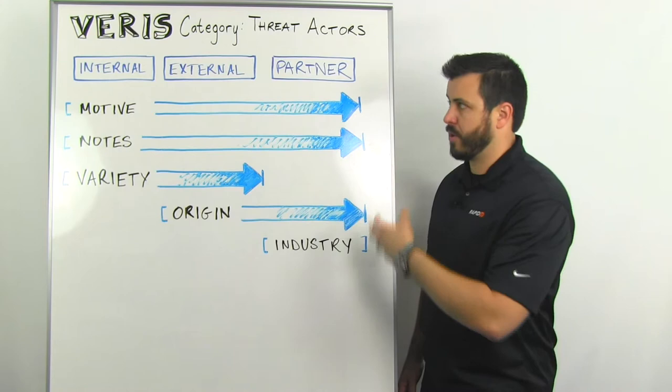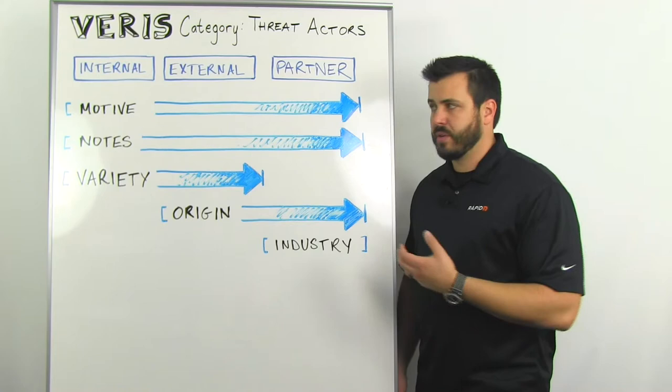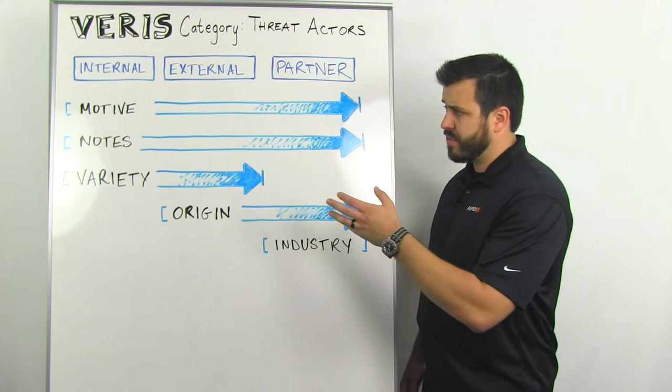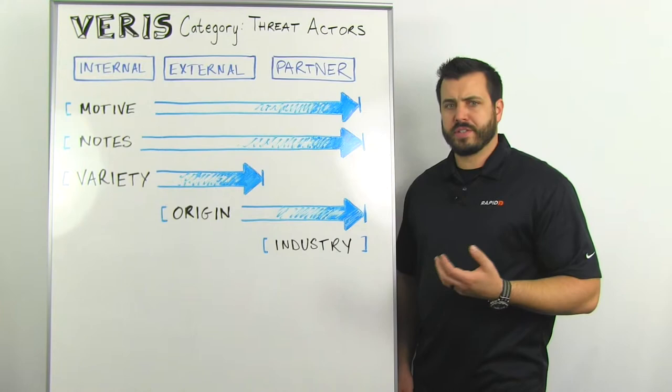These entities could be malicious or not. They could be intentional or accidental. They could be causal or contributors. VERIS breaks these groupings down into three primary categories: there's internal, there's external, and there are partners. That's how you define an actor. So depending on what type of actor we're talking about, there are additional attributes that will apply.